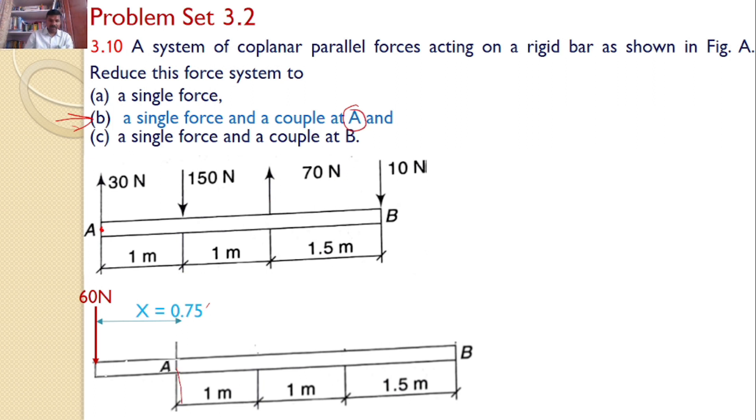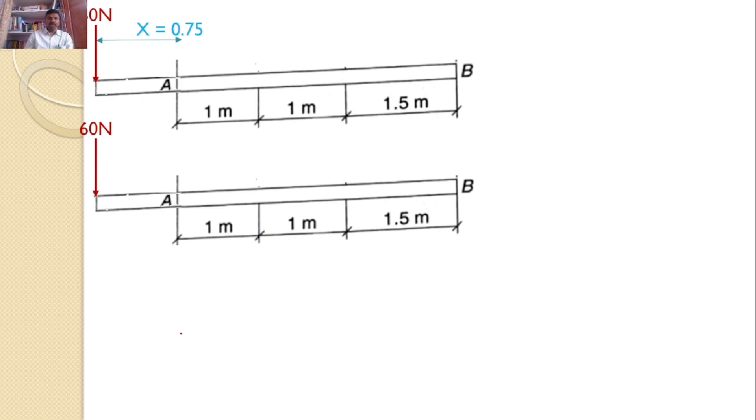So for that, what I will do, I will introduce a 60 Newtons force in the downward direction and a 60 Newtons force in the upward direction. This is 60 and this is 60. So that will not change the system, but this is 60 and this is 60. These two 60s will introduce a couple. What I will do is, the same 60 Newtons, I will introduce two forces, 60 Newtons and 60 Newtons at point A. And I know this distance. So this couple, this force and this force, these two will introduce a moment in this direction.